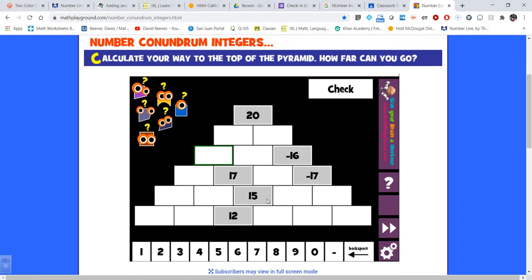So I'm gonna start right here. I've got 15 and I've got 12 and the question is what do I add to 12 to get 15? And the answer is 3. And then right here what would I need to add to 15 to get 17? And the answer would be 2. And then we're gonna continue to work our way up.